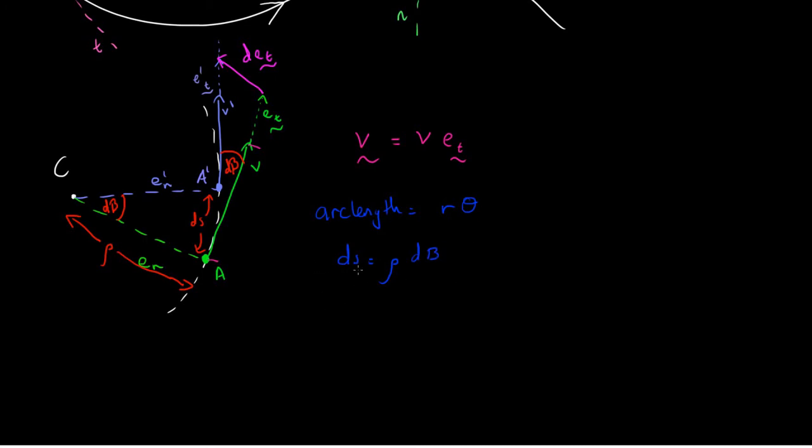Now, s is our, if you take the limit, it is our displacement along this line. So we can say that v vector is equal to the derivative of ds with respect to time. And so that is the derivative of rho d beta with respect to time, which is just rho beta dot.